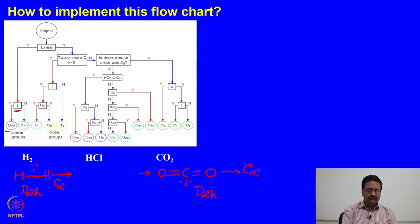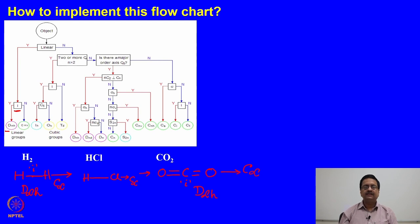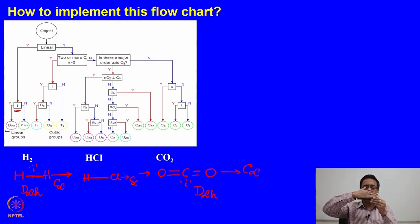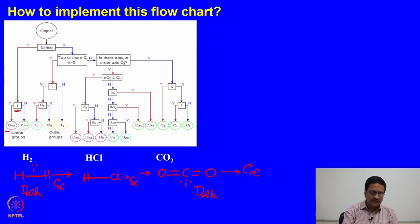In between we have HCl, which is although linear and contains the C∞ axis like the other two molecules, it does not have the inversion center. Once the i is missing, we consider whether there are infinite number of σv's containing the axis of symmetry — which this molecule has. The point group of this molecule is C∞v.